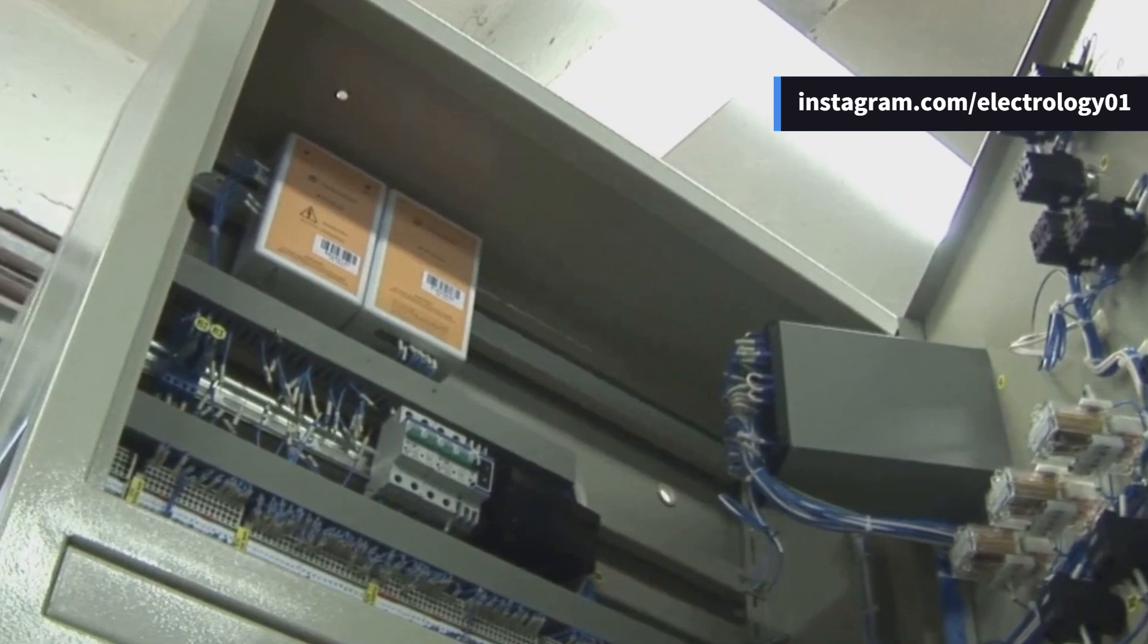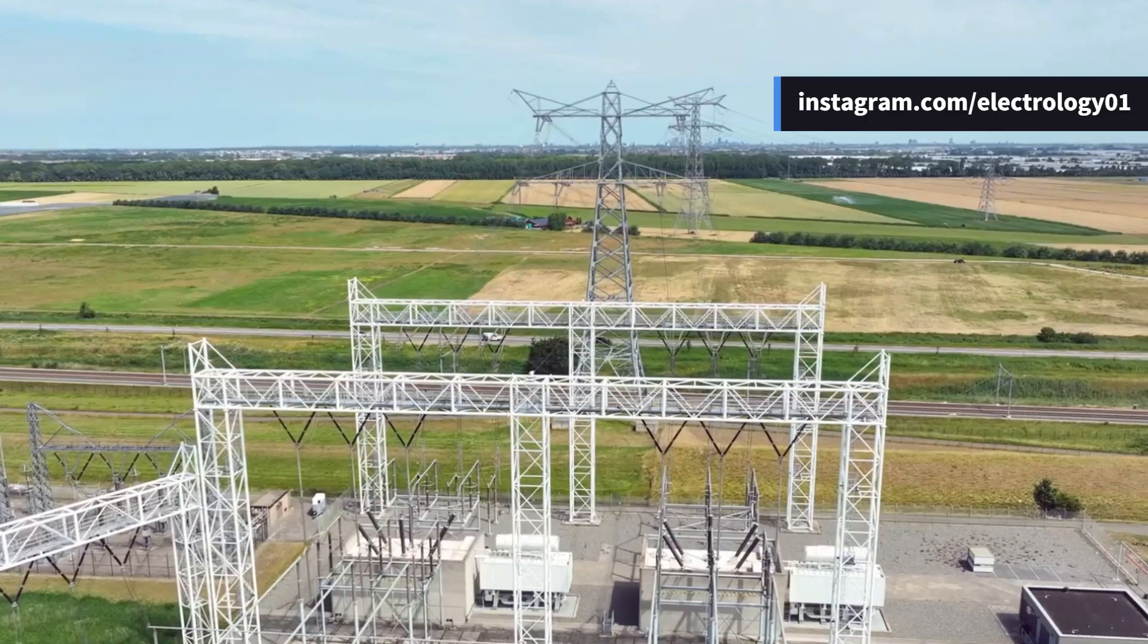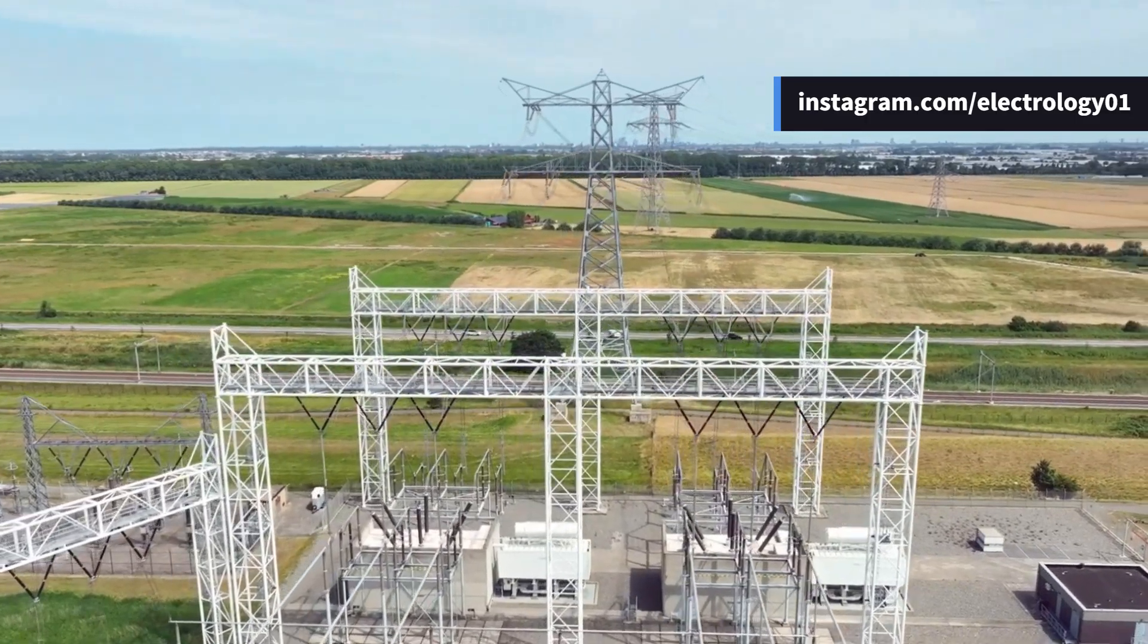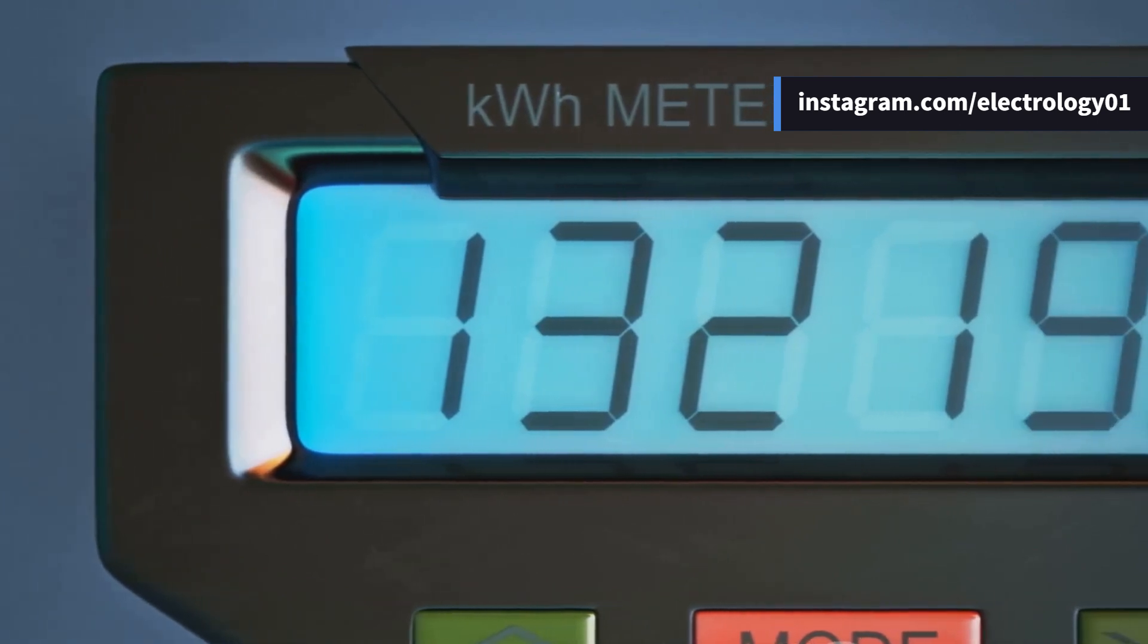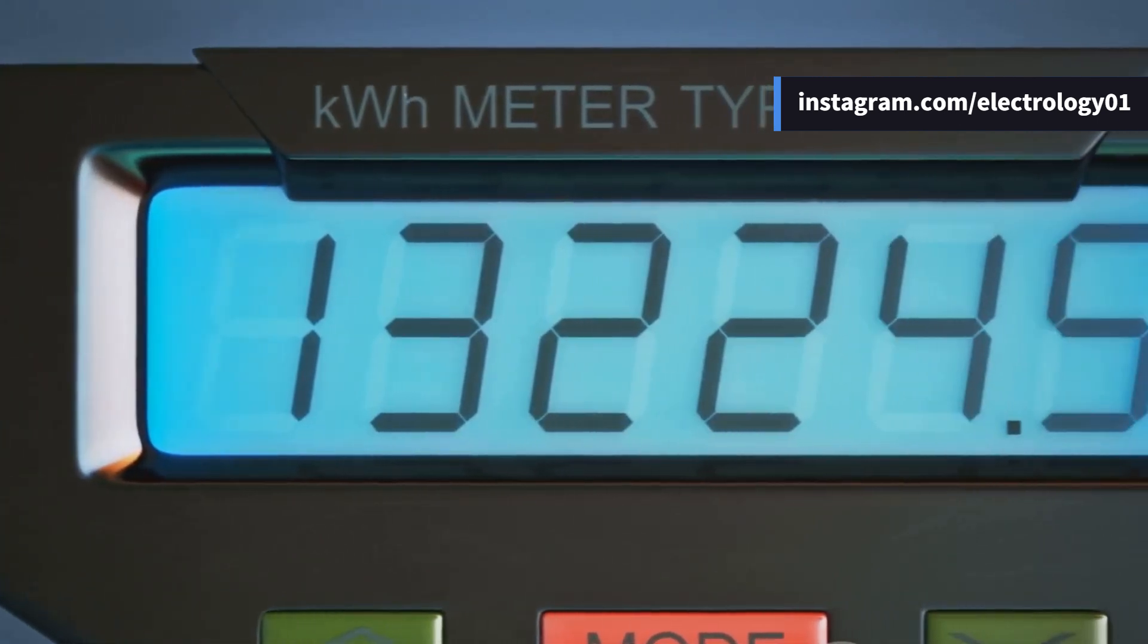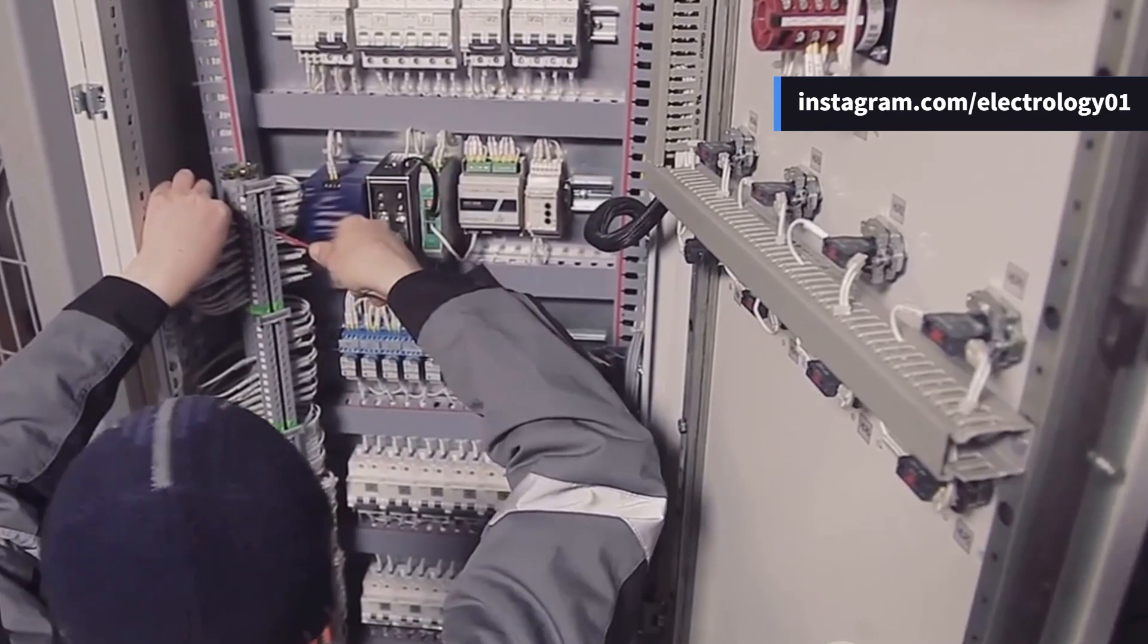So it's clear why protection CTs must be used for relays to ensure reliable fault detection, and metering CTs must be used for accurate energy measurement under normal conditions. Always use the right CT for the right application to maintain system reliability and avoid costly damages.